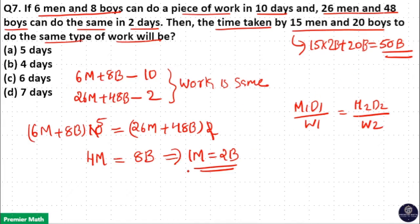So apply 1 man equal to 2 boys in the first equation as well. That is 6 men plus 8 boys: 6 men equals 6×2, 12 plus 8 boys.